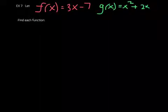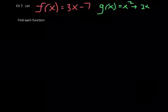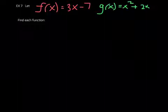Alright guys, we're at example 7 here. Let f of x equal 3x minus 7, g of x is x squared plus 2x. The same two functions we've been working with. This time around, notice the instructions say find each function.